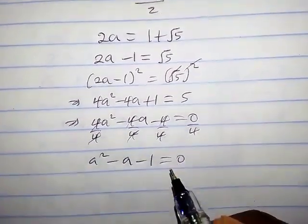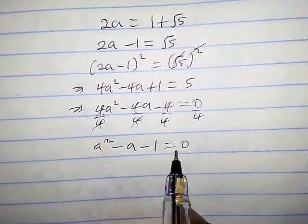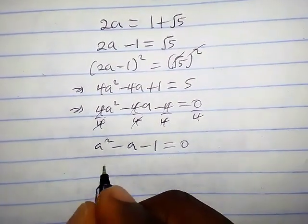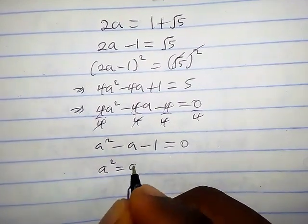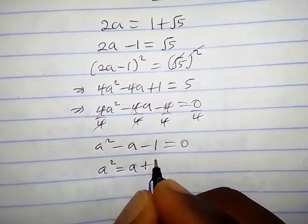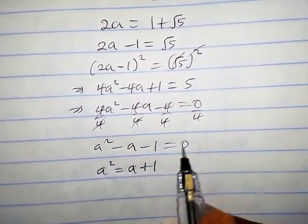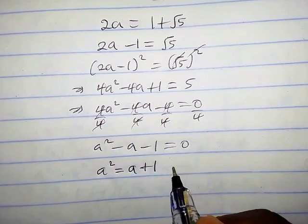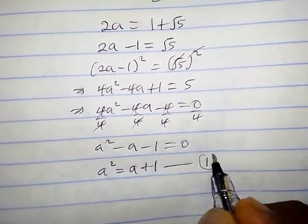Dividing through by four, all terms cancel down to give a squared minus a minus one equals zero. Making a squared the subject of the formula, we have a squared equals a plus one. Let's call this equation one.